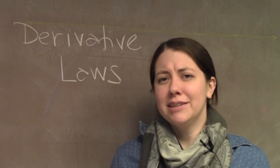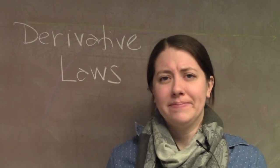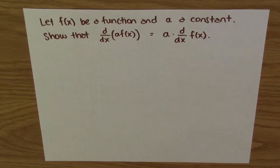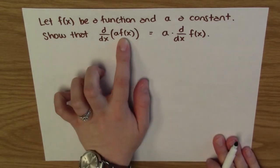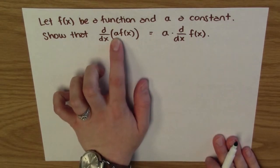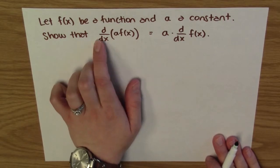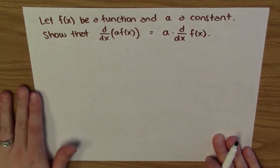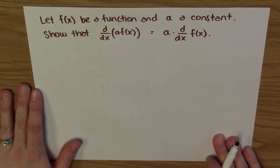There are more limit laws, though. Let's check out another one. Suppose I'm given some function f and some number a — I call this a a constant, because it's just a number and it's not changing depending on x. Now I multiply my function times this coefficient a, and I want to show that I can just factor this a right out of the derivative. Let's again use the definition of the derivative to figure out why this is true.